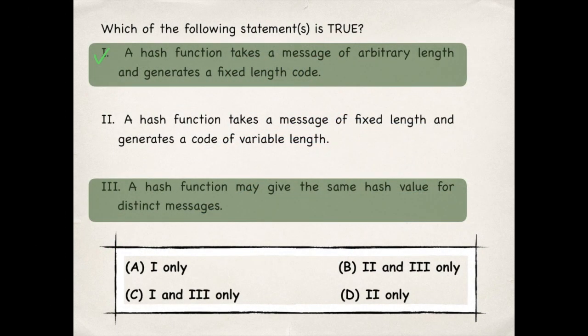The first statement is the definition: a hash function takes a message of arbitrary length and generates a fixed length code. The third statement we have just seen: a hash function may give the same hash value for distinct messages. So the correct statements are first and third.